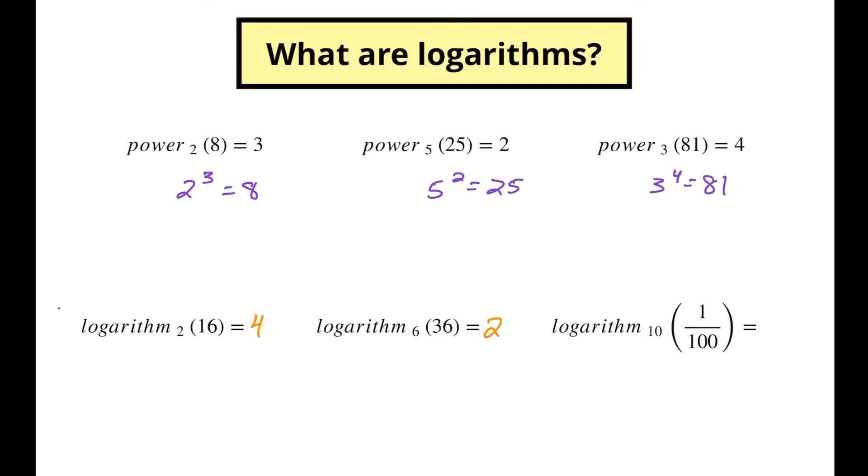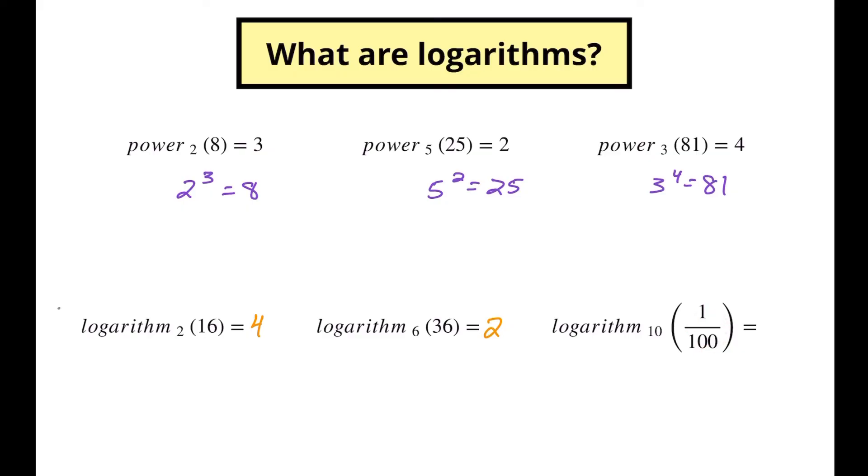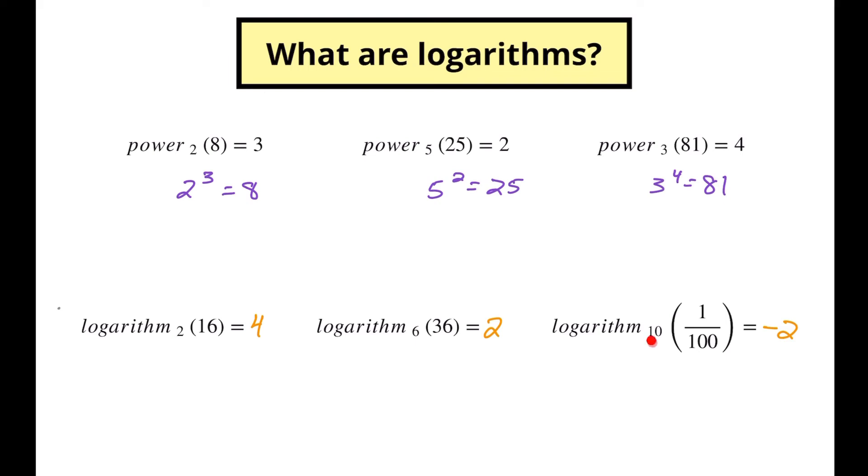Okay, this one gets a little bit trickier. All right, so logarithm_10 of 1 over 100. Now this one you're going to have to have some knowledge of your rules of exponents to be able to get into this one, but this gives us, let's see, 10 that would have to be 100, so that would be squared, but to make it a fraction that would have to be a negative 2. So if you're not familiar with that, you're going to want to go back and check out our rules of exponents video linked in the description below. So 10 to the negative 2 power is 1 over 100.